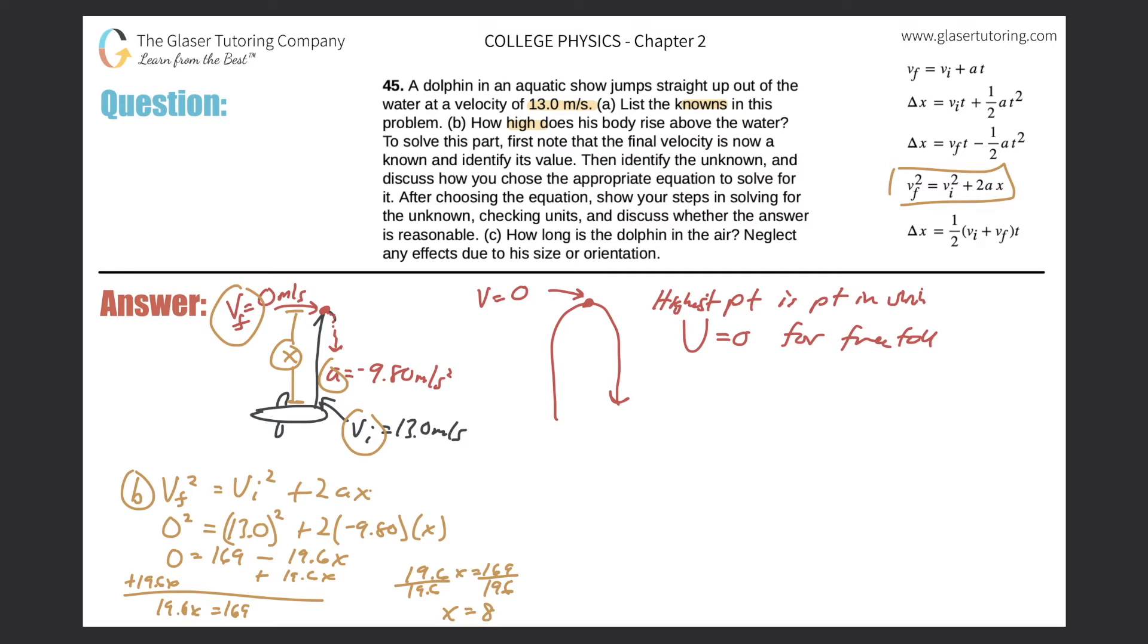So the x value here, the displacement, will be 8.62, and that is in meters. So that's how high the dolphin will actually jump. He's going to jump about eight and a half meters out of the water. Alright, and now for part C, part C will be to now find how long the dolphin is in the air.